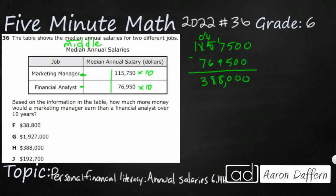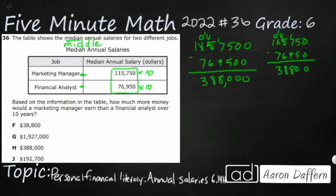Another way you could do it is subtract the two annual salaries first and then multiply by 10. So if we subtract $115,750 minus $76,950, we get $38,800 — that's the difference for just one year. Notice that $38,800 is actually one of the incorrect answer choices. That's the trick in this problem: you still need to multiply by 10. Once you do that and add the zero, you get $388,000 — there's your answer.